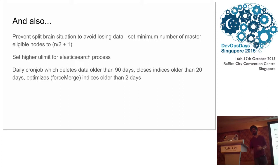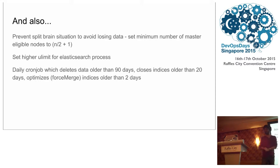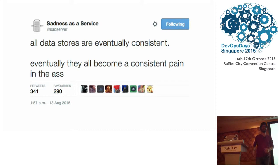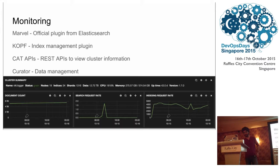We have a daily cron job which deletes data older than 90 days, closes indices older than 20 days, and runs optimize — which is basically a force merge operation on Lucene — on indices older than two days. You don't want your data store to become a pain, so it's important to monitor it. Elasticsearch has a bunch of tools for that.